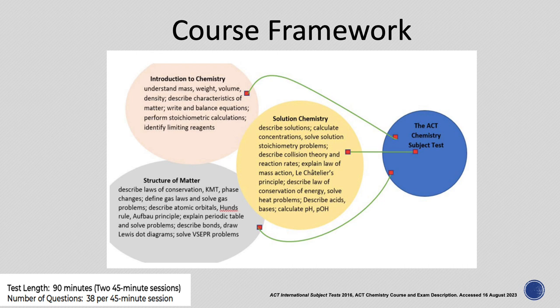The course consists of three main themes that will be directly assessed in the ACT chemistry subject assessment. The first theme includes an introduction to the chemistry course, which provides for assessing the basic units of measurement and stoichiometric calculations. The second central theme is the structure of matter, which includes details of the primary electronic configuration, as well as an introduction to chemical bonding.